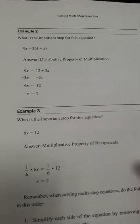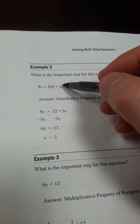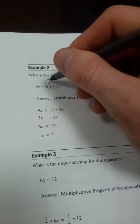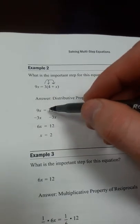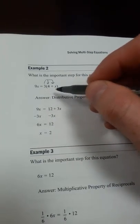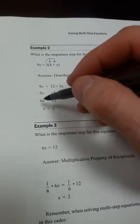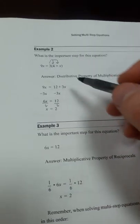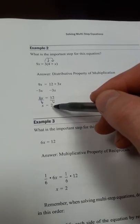We're stuck with parentheses again with an x inside, so we need to use the distributive property to get rid of them: 3 times 4 and 3 times positive x. So 3 times 4 is 12 and 3 times x is 3x, giving us 9x equals 12 plus 3x. Subtract 3x from each side — left with 6x equals 12. Divide each side by 6, the 6's cancel, and x equals 2.